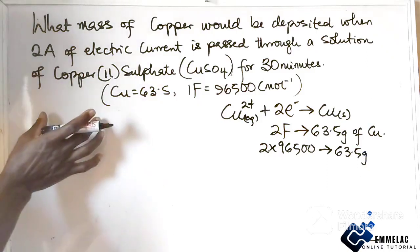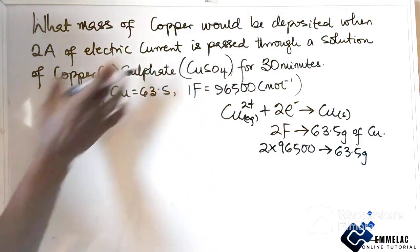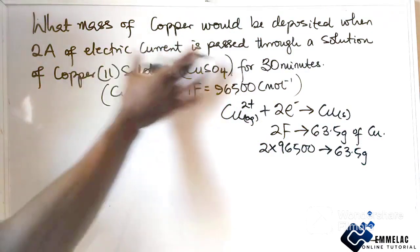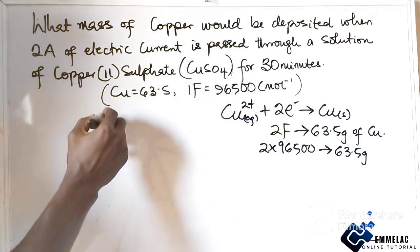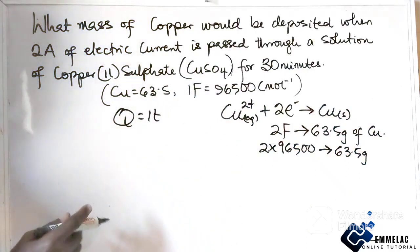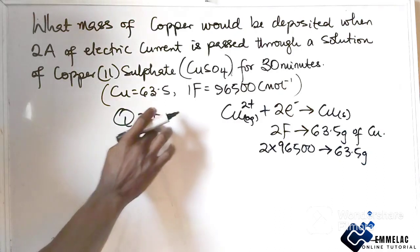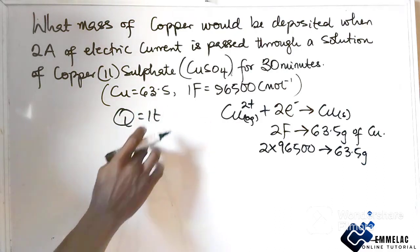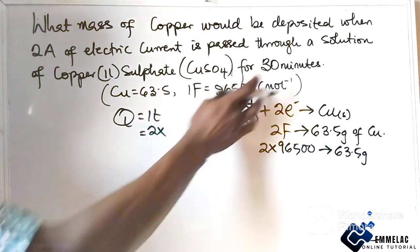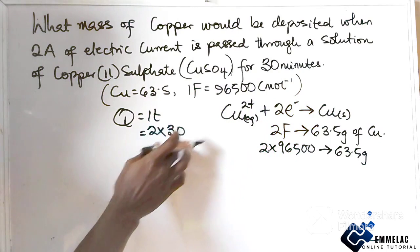Now let us calculate the quantity of electricity. Following Faraday's first law, the quantity of electricity equals current multiplied by time: Q = I × t. The current is 2 amperes and the time is 30 minutes, which we must convert to seconds.